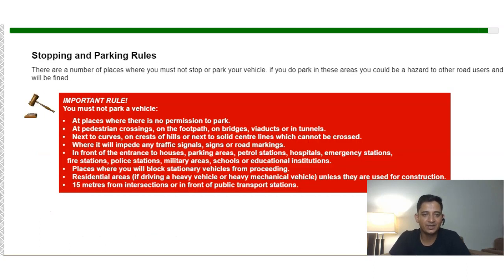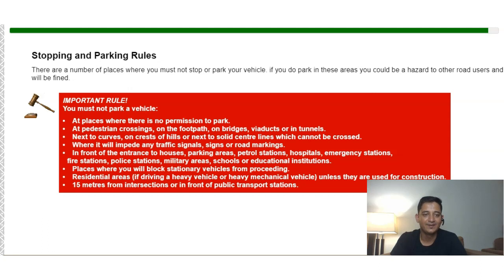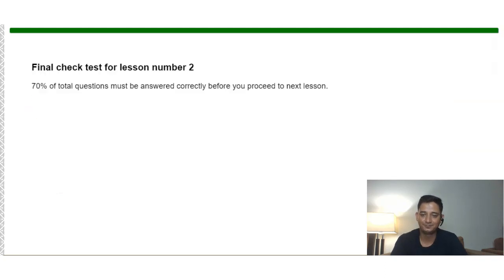Stopping and parking rules: you must not park where there is no permission to park, at a pedestrian crossing, on a footpath, on a bridge, or in a tunnel. Never park next to a curb or on a hill next to a solid center line that cannot be crossed. That concludes Lecture 2 on RTA theory classes. Please like and subscribe to the channel.